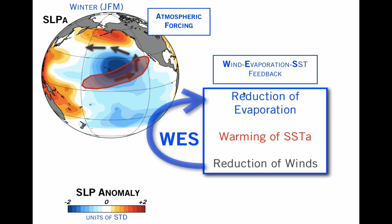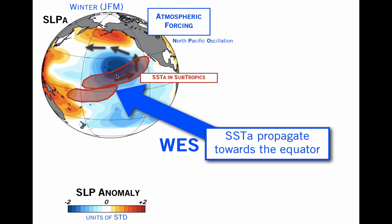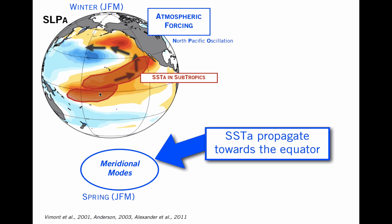This particular feedback is known as the wind evaporation SST feedback, which is discussed in papers by Shang-Ping Xie and is often referred to as the WES feedback. Now once you have these SST anomalies in the subtropical regions, the rotation of the planet makes it such that these anomalies propagate towards the equator on a meridional plane, and as such they have been referred to as meridional modes. This propagation typically happens in the spring, and there are papers by Vimont and Shang that document these types of modes.